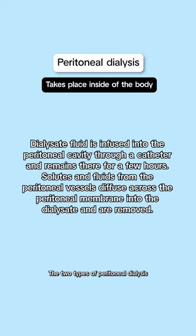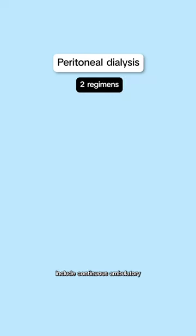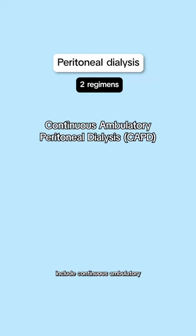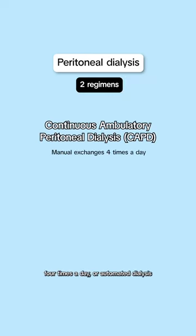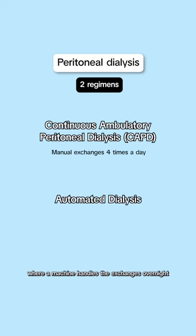The two types of peritoneal dialysis include continuous ambulatory peritoneal dialysis, which involves manual exchanges four times a day, or automated dialysis, where a machine handles the exchanges overnight.